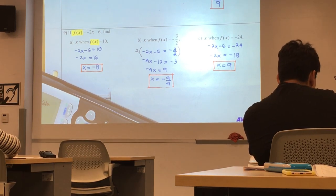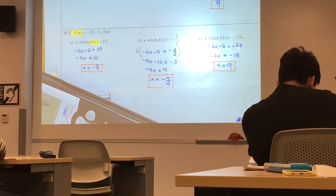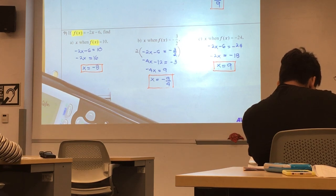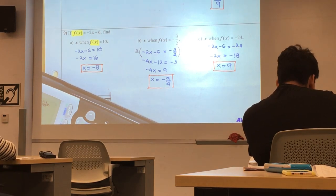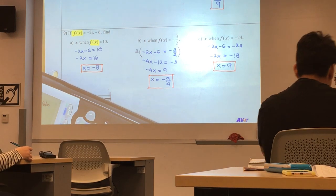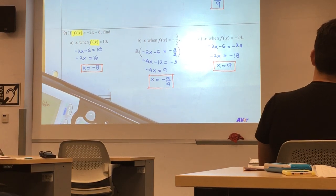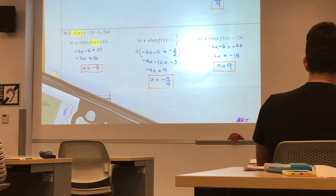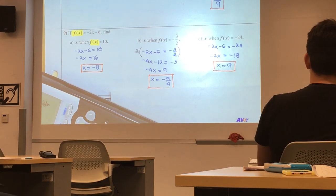All right. If you are in order, see, our y is negative 24. So, on the right one, we've got x is negative 9 over 4. Any questions for this problem?